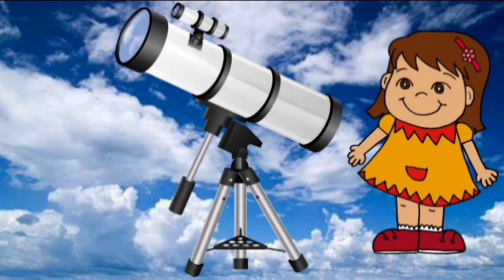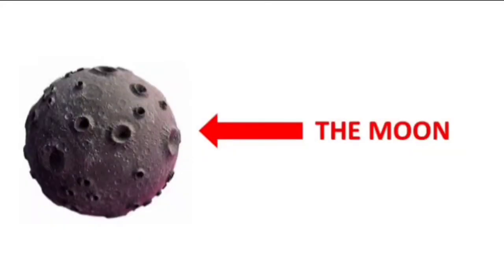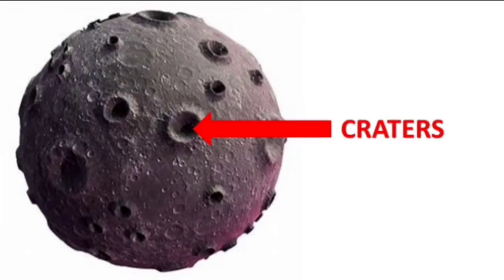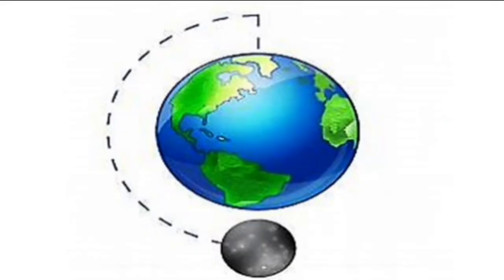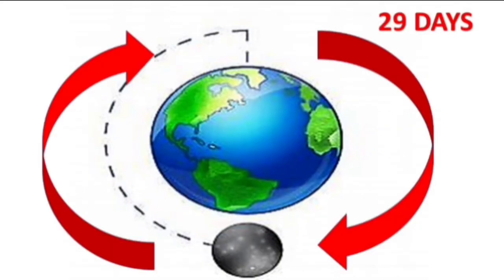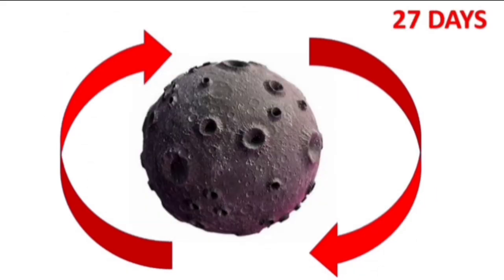This is the moon. When you look through a telescope the moon looks like this, and if you zoom in you can see holes on the moon called craters. The moon spins around the Earth and that takes 29 days. The moon also spins around itself in 27 days.